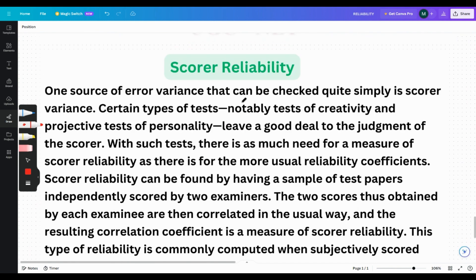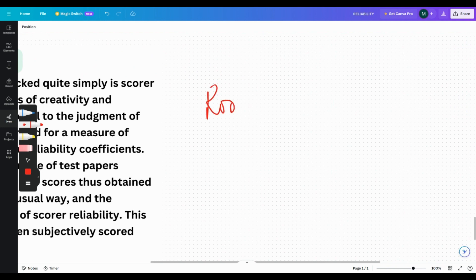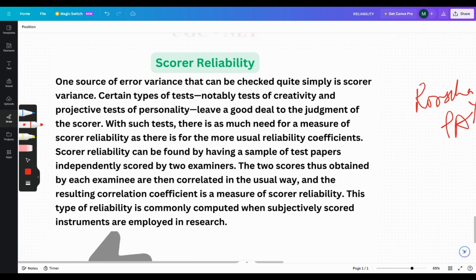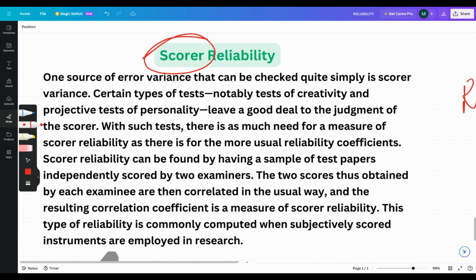What is scorer reliability? In certain personality tests like Rorschach or TAT, when so much is dependent on the scorer, how would you understand if the scorer is giving almost what the test needs? How would we know if there is not a lot of error variance? This is done by independently getting scored by two examiners. The scores obtained from two examiners would be correlated in the normal way, and the correlation coefficient would be the measure of scorer reliability. Scorer reliability can be done with the other reliabilities as well.